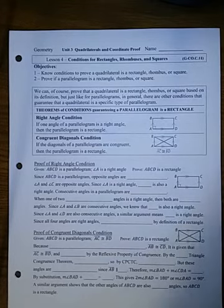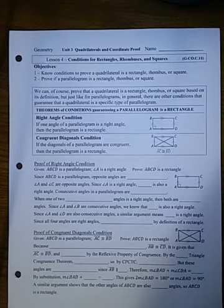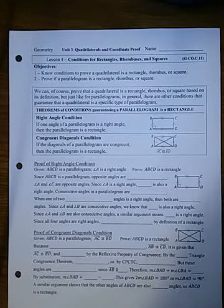Geometry Unit 3, Lesson 4: Conditions for Rectangles, Rhombuses, and Squares. We want to know what conditions prove that some quadrilateral is a rectangle, a rhombus, or a square, and then we'll prove if a parallelogram is one of those.